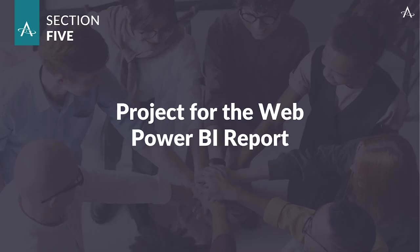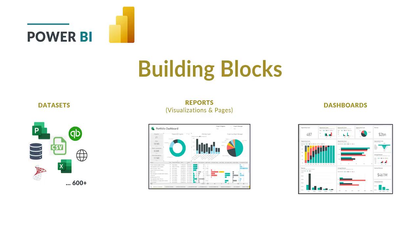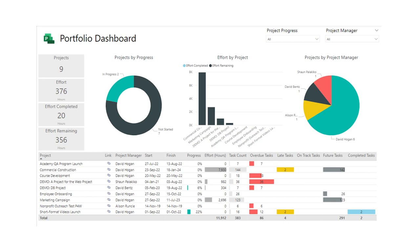Now, let's dive into the Project for the Web Power BI report. The first thing to understand is that there are essentially three building blocks to Power BI. The first are data sets — one of the data sets is your Microsoft Project for the Web information. All reports in Power BI are built on a series of data sets, and you can get access to over 600 plus connectors and data sets from all different types of applications to feed Power BI reports. The second building block are the reports themselves, which can include visualizations and pages such as pie charts, donut charts, and more. Reports can also have multiple pages.